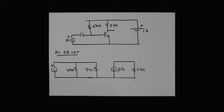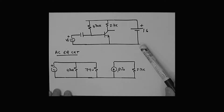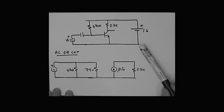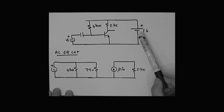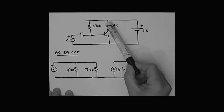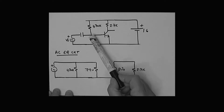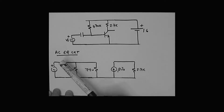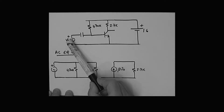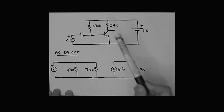I want to go back to one of our earlier examples - I think this was the first example we looked at, where we basically had the 16 volt source, the 2.7k resistor, and a 470k resistor sitting here, with our signal source applied like so. We were able to determine the voltage gain of that particular circuit.